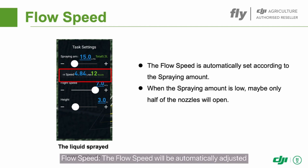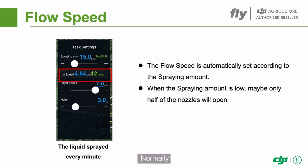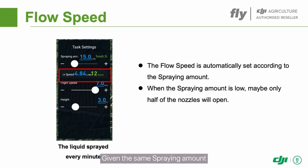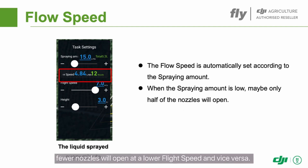Flow speed. The flow speed will be automatically adjusted based on the set flight speed after the spraying amount is set. Normally, the higher the flight speed, the higher the flow speed and vice versa. The number of open nozzles is determined based on the flow speed. Given the same spraying amount, fewer nozzles will open at a lower flight speed and vice versa.